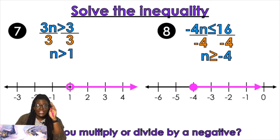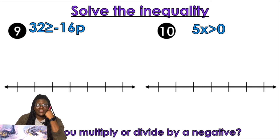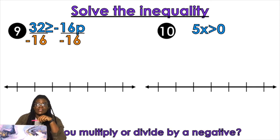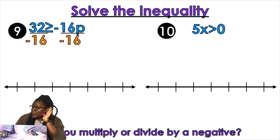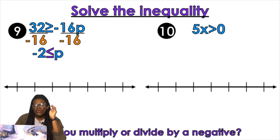Don't forget to flip your symbol — that's what's going to get you. 32 is less than or equal to negative 16p. I need to get p by itself. Divide by negative 16 on both sides. Did I multiply or divide by a negative? Yes. So what does that mean? Flip the symbol. So negative 2 is less than or equal to p.